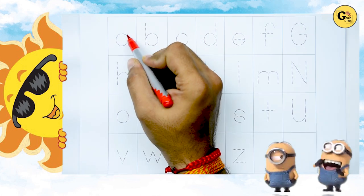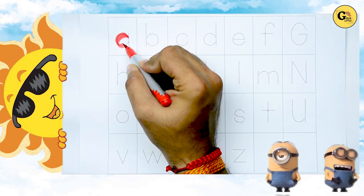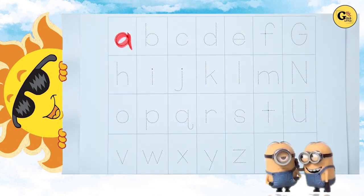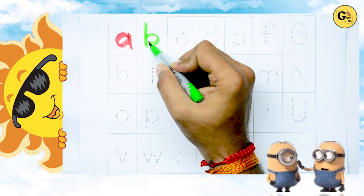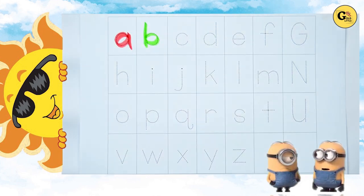A, small a with red color. It's A. B with green color. It's B, small b.